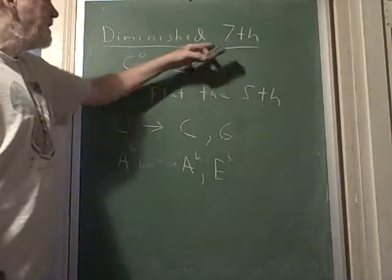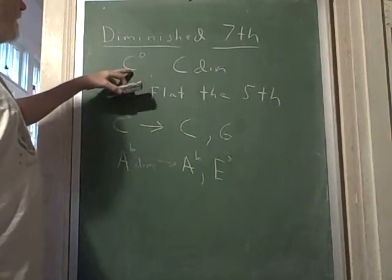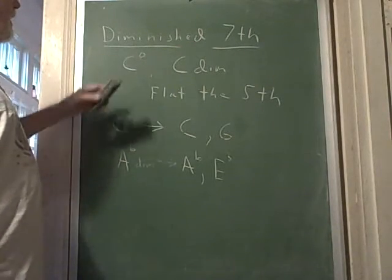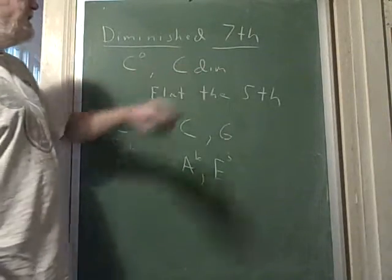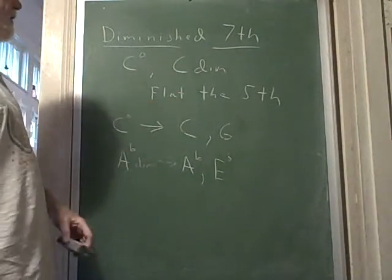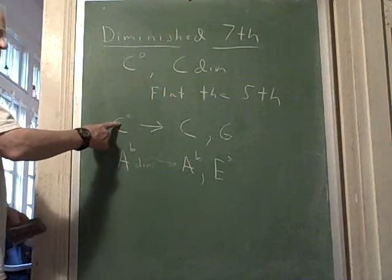A diminished or diminished seventh, as it's sometimes called, looks like this. Here's a C diminished. I'll put a circle there. This is a comma, or they'll write C dim like that. And all we have to do is flat the fifth. For instance, here's a C diminished.